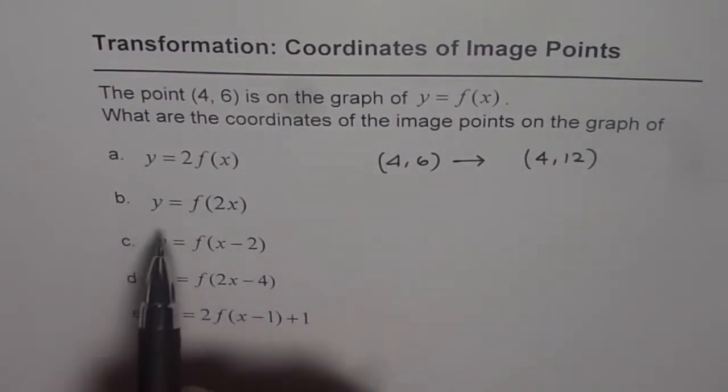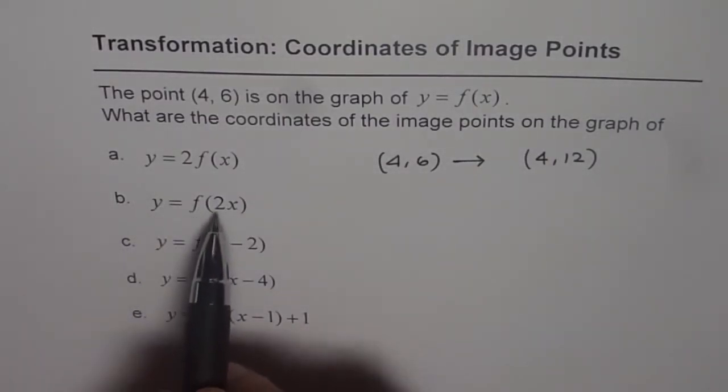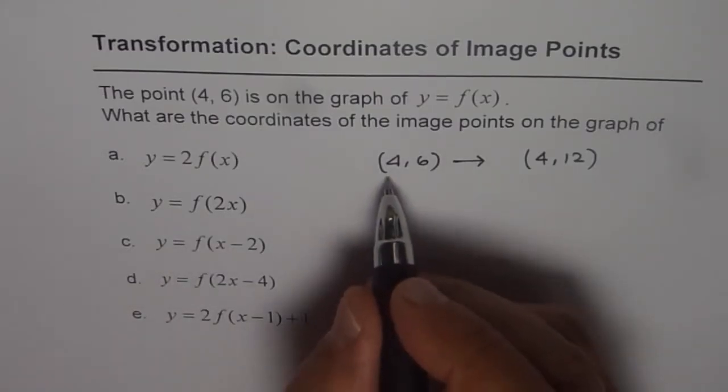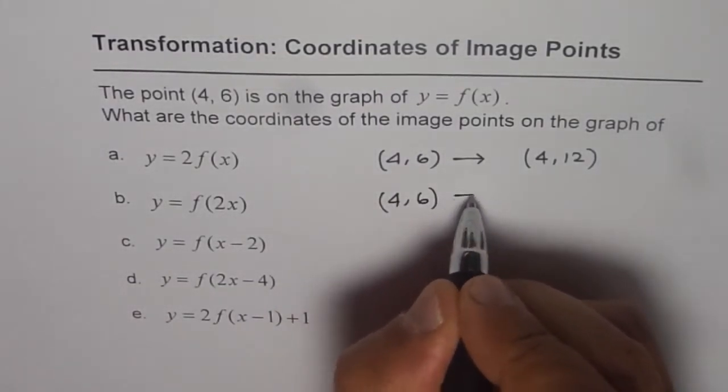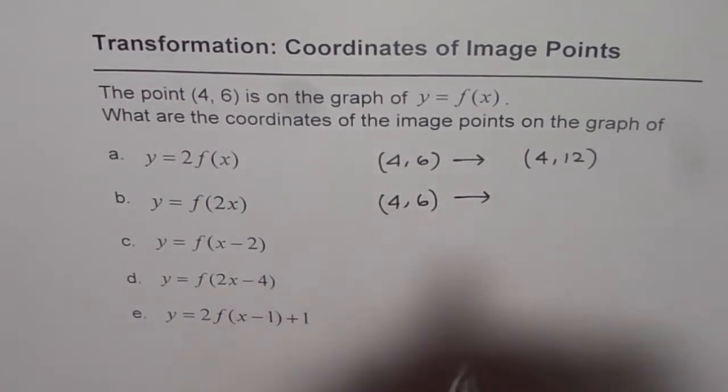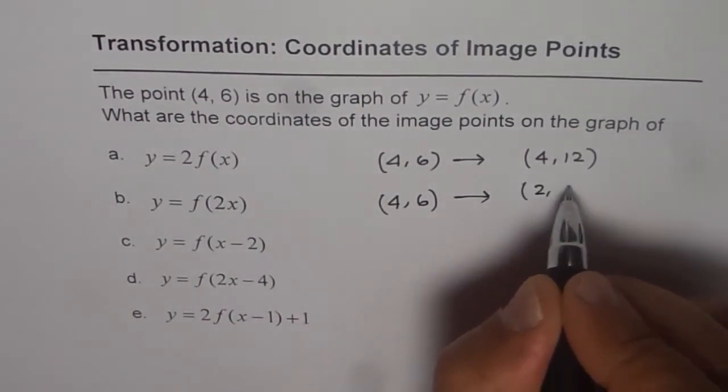In the second case, we have y = f(2x). Here the transformation is horizontal compression by a factor of half. The x-coordinate becomes half of the original value; the y-coordinate remains the same. So half of four is two, and we get (2, 6).